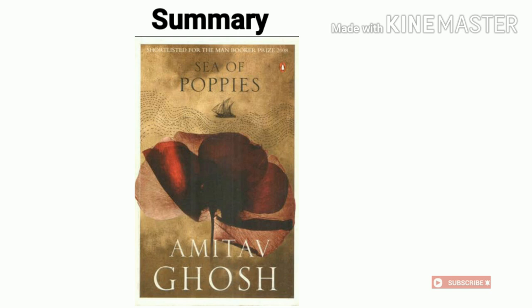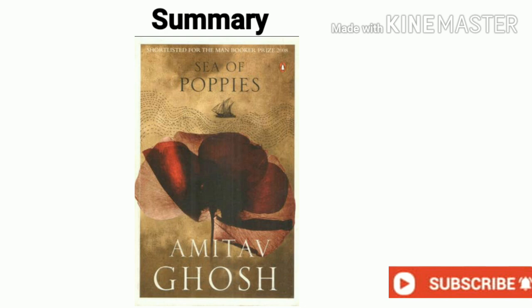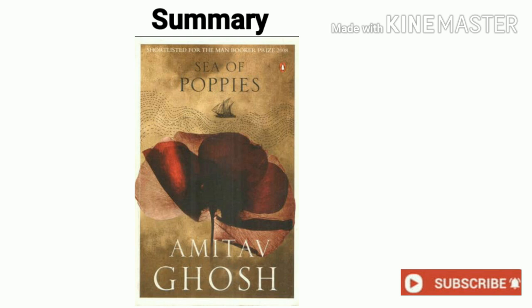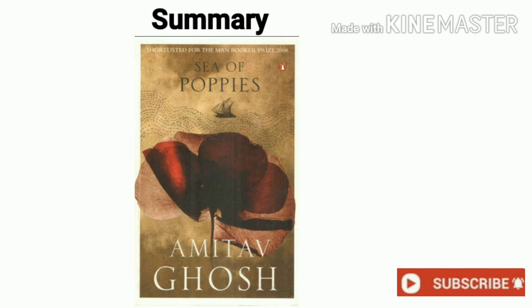The action starts with the arrival of the Ibis and the dropping of its anchor near Gangasagar Island in the second week of March 1838. As the ship waits for the pilot boat to take it to Calcutta port, the story begins in a riverside village in eastern Bihar, where Deeti — the first victim of enforced opium cultivation in the book — is introduced. Deeti, who sees the Ibis in a vision, lives on the outskirts of Ghazipur town. Her husband Hukum Singh is an opium factory worker.